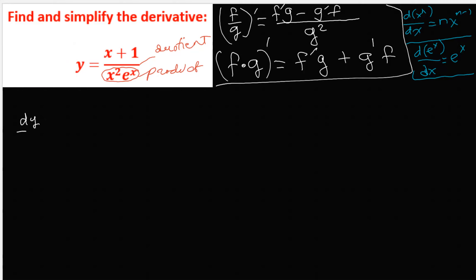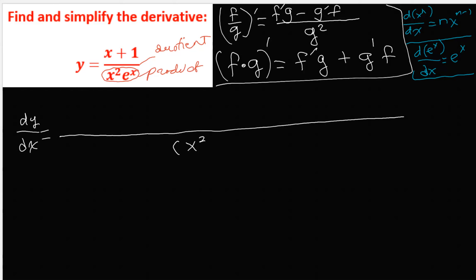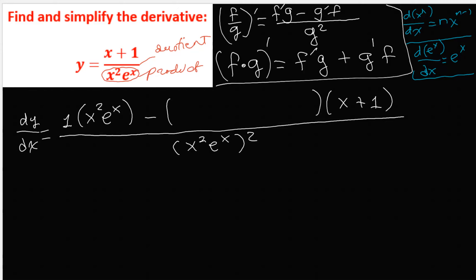So the derivative of y with respect to x is all over the denominator squared — that would be x squared e to the x, quantity squared. The derivative of x plus 1: the derivative of x is 1 and the derivative of 1 is 0, so you have 1 multiplied by the denominator x squared times e to the x, minus the derivative of the denominator multiplied by the numerator x plus 1. I leave a lot of room here because I need to apply the product rule. The derivative of x squared e to the x is 2x·e to the x plus e to the x times x squared — that's the product rule inside there.